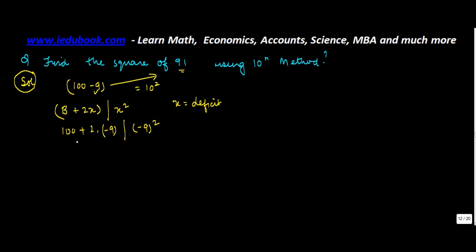So 100 plus 2 into minus 9 can be written as 100 minus 18 or 82. 9 square can be written as 81. So 82 is there with the base of 100 in 200.